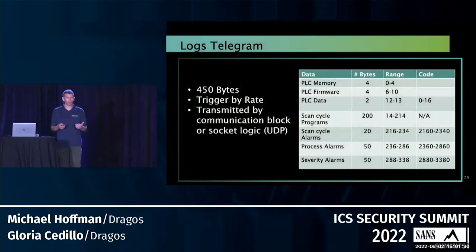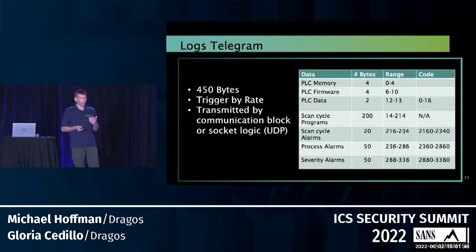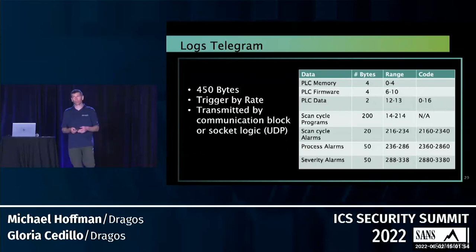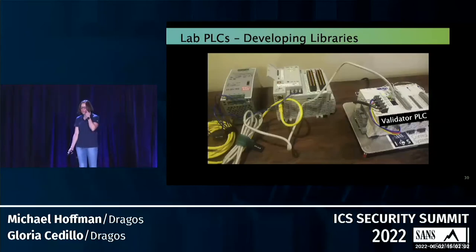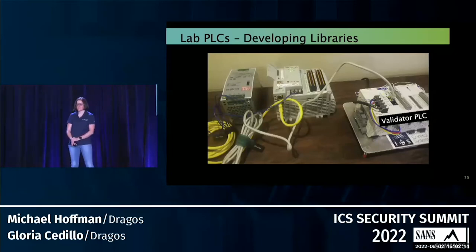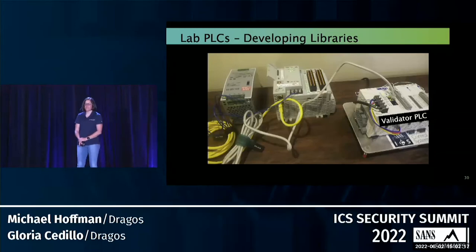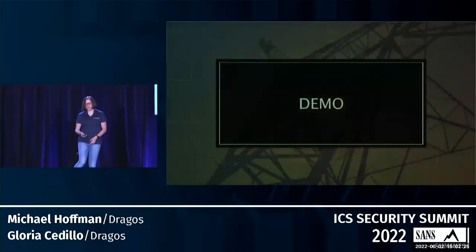This is an example of log forwarding — we're leveraging 450 bytes, which is the range Rockwell uses for log transmission. We're using the built-in capabilities of those functions, building in almost a protocol — a log format using the memory, firmware, and different data elements — and this can all be transmitted with UDP. For the demo, this is what we use to create the libraries: a Rockwell CompactLogix PLC, and then a validator PLC from the SANS ICS 612. The validator PLC checks the monitoring and also checks the firmware of the other PLC.